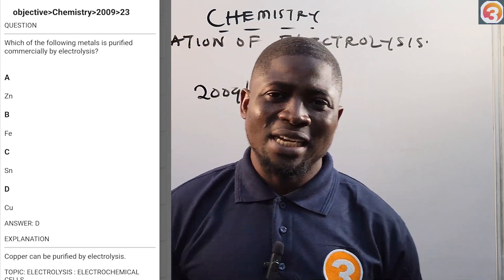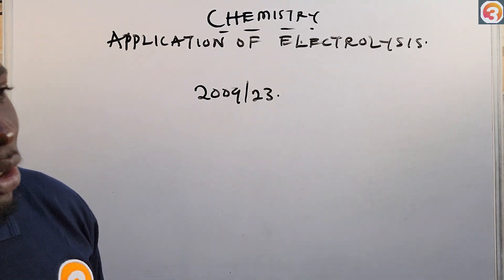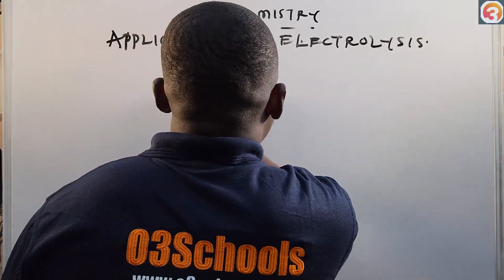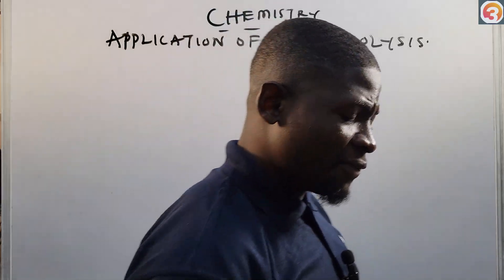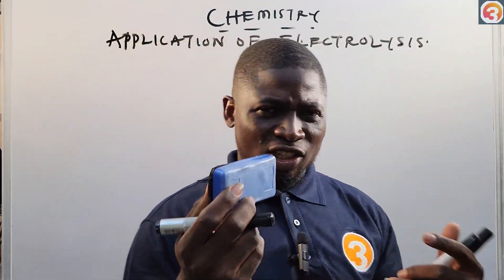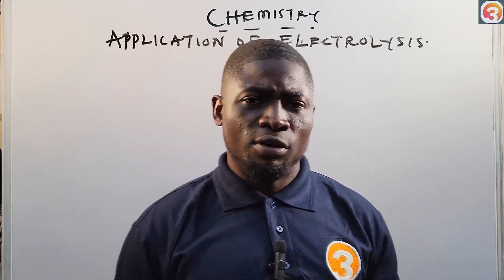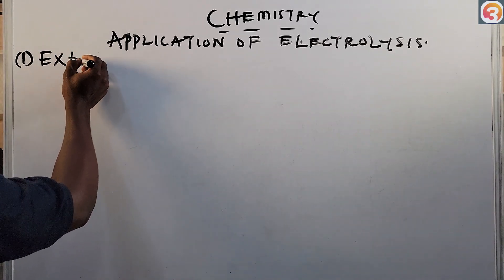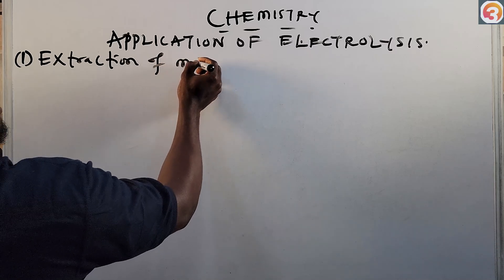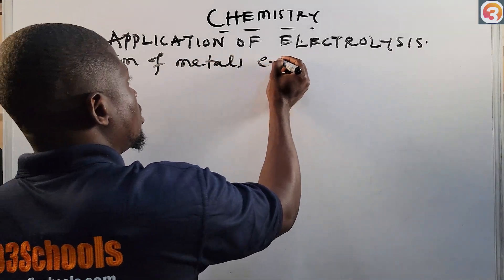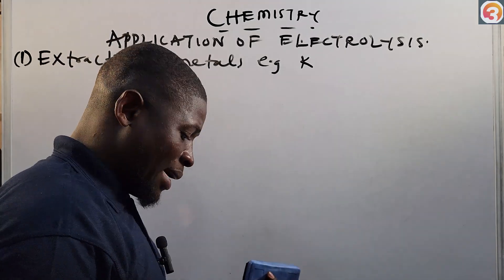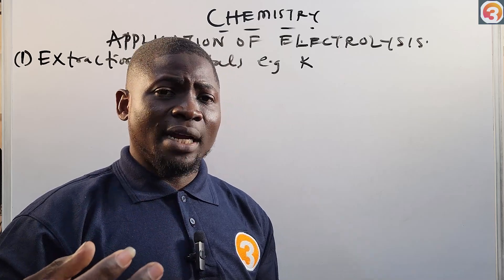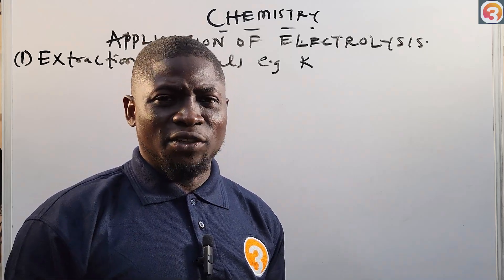So at the end of this video we'll come back and answer that question. Now, the first foremost application of electrolysis is the extraction of metals from their ores. For example, metals like potassium — those metals at the top of the electrochemical series — can be extracted from their ores by electrolysis.